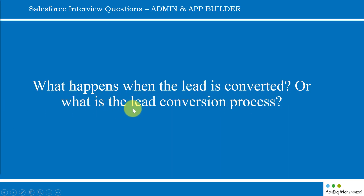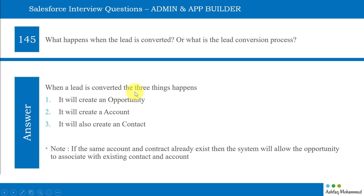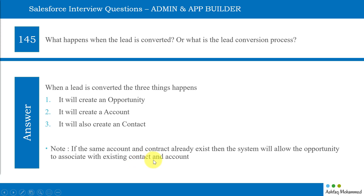What happens when the lead is converted — what is the lead conversion process? When we hit that convert button, three things happen: it will create an opportunity, it will create an account, and it will also create a contact. Opportunity will have the details of what products this customer wants to purchase from us. Account is nothing but the name of the company that wants to purchase things from us. And contact is the contact person from the company who is interested in buying the products from us. Note: if the same account and contact already exist, the system will allow the opportunity to associate with the existing contact and account.